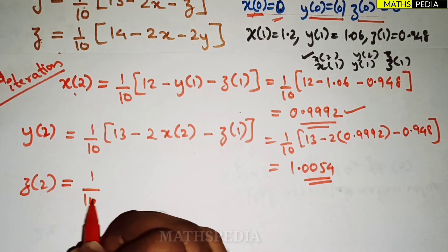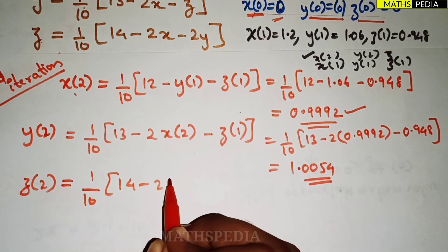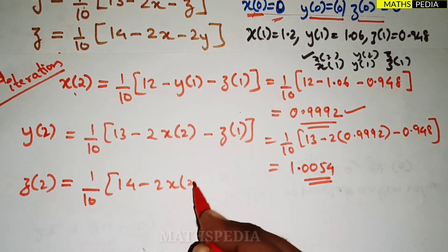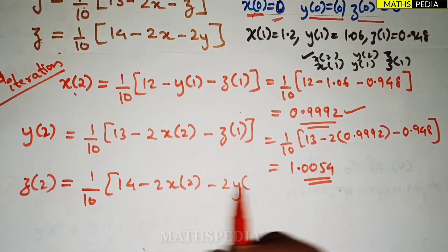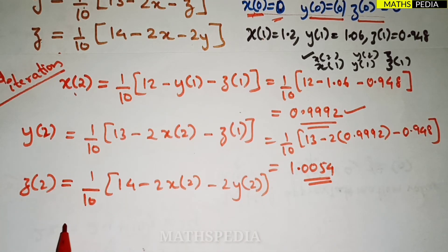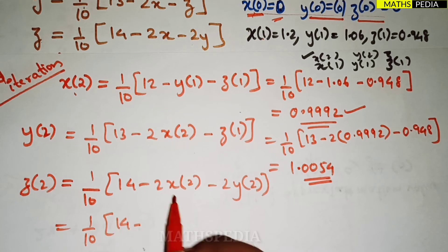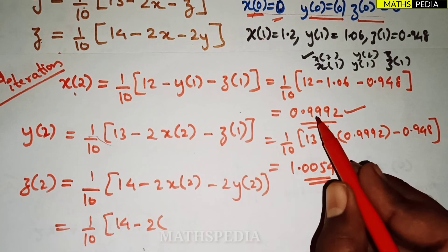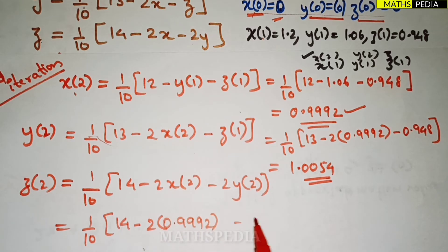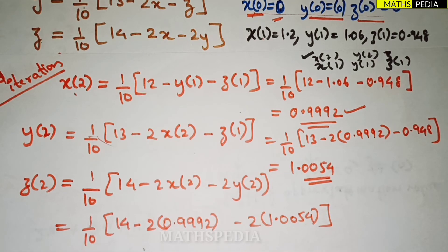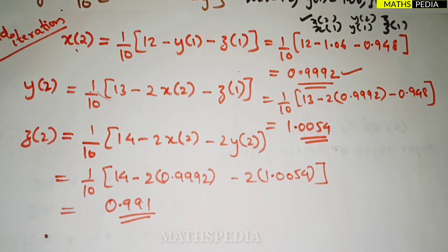For y(2) = (1/10)(13 − 2·x(2) − z(1)): using x(2) = 0.9992 and z(1) = 0.948, we get y(2) = 1.0054. For z(2) = (1/10)(14 − 2·x(2) − 2·y(2)): substituting x(2) = 0.9992 and y(2) = 1.0054, we get z(2) = 0.991. Second iteration complete: x(2) = 0.9992, y(2) = 1.0054, z(2) = 0.991.